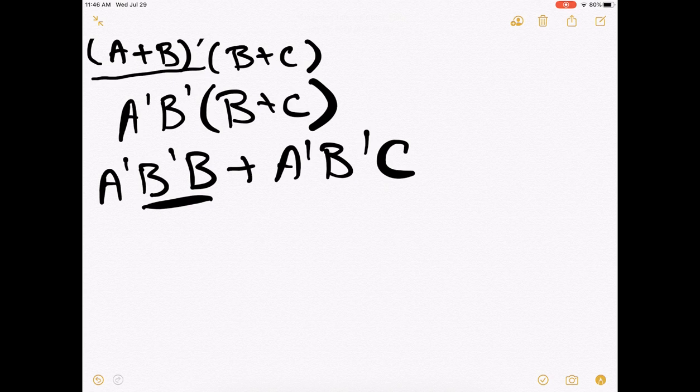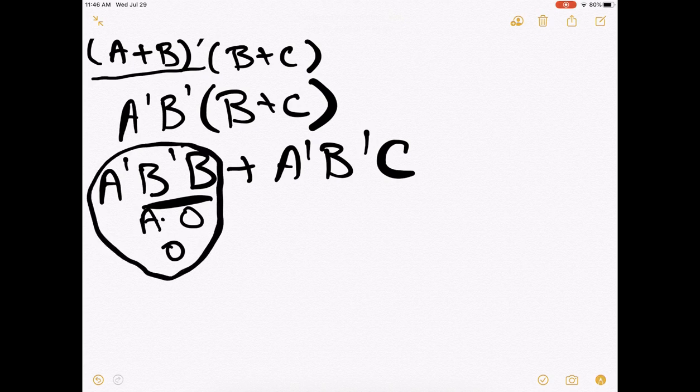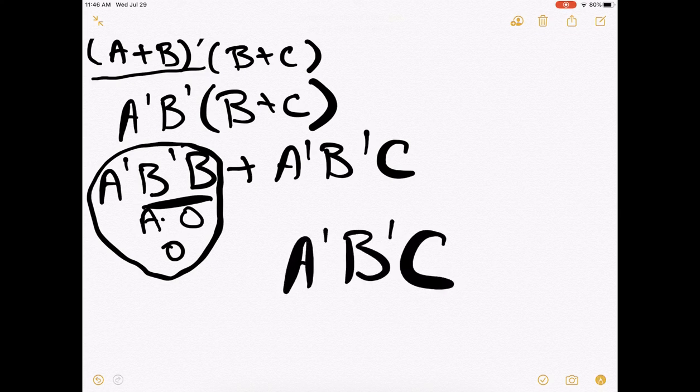That B naught, B is always going to be zero. Anything ordered with zero is going to be zero. So this entire term falls out, and what we're left with is A naught, B naught, C. That's about as simple as we can go with that one.